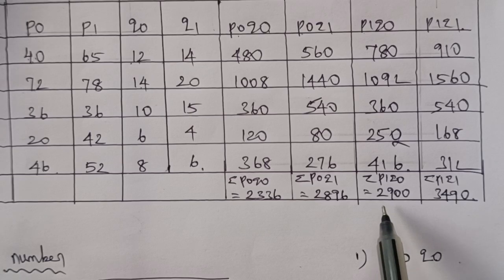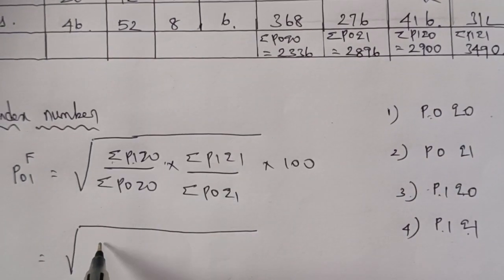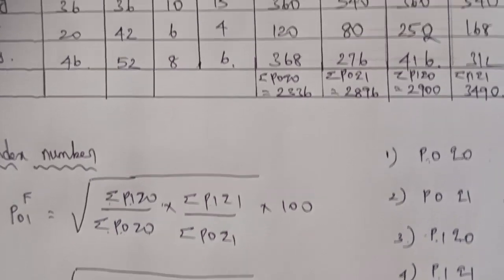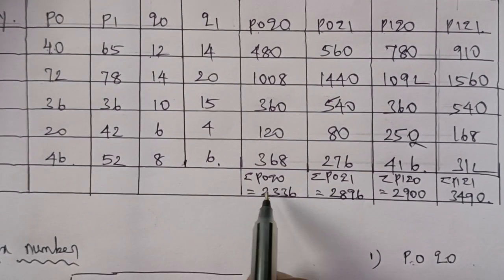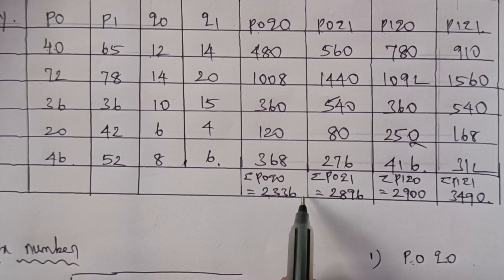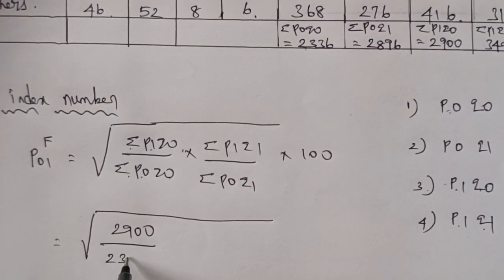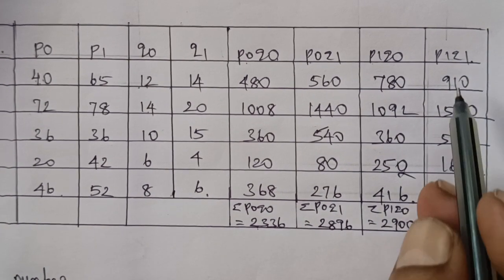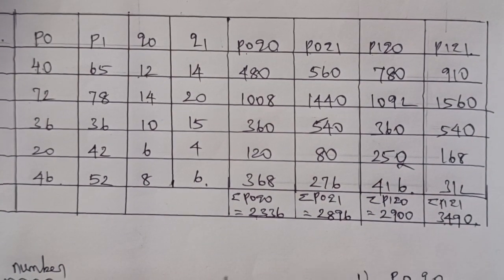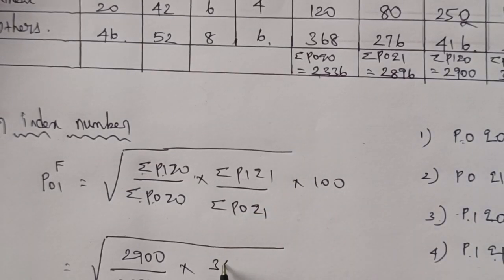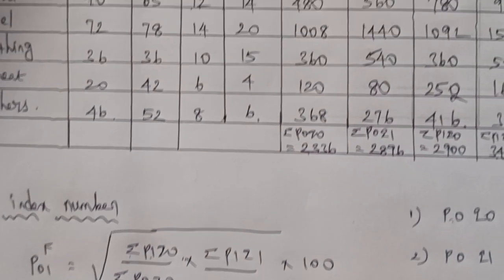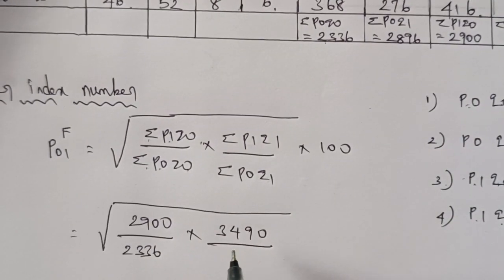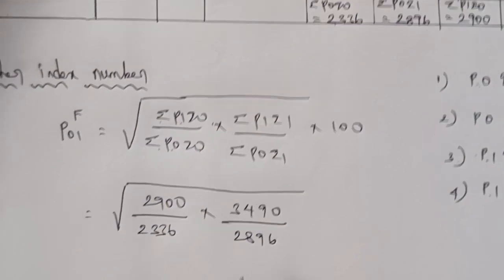Yes, right: 2900. Add by summation P0Q0. Summation P0Q0 data — enter the data: 2336. Enter the entry. Summation P1Q1 — summation P1Q1. See your card: the value including summation P1Q1.